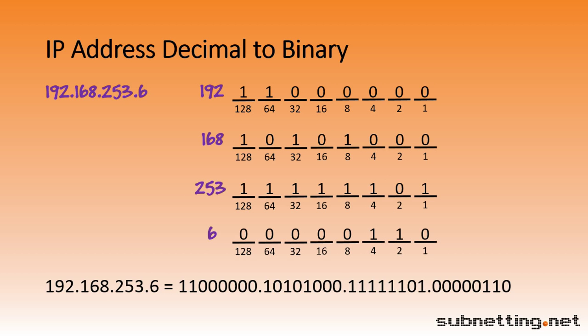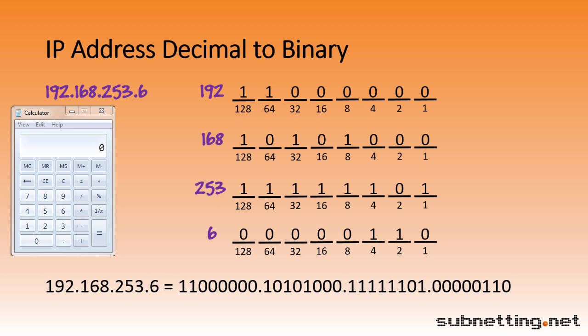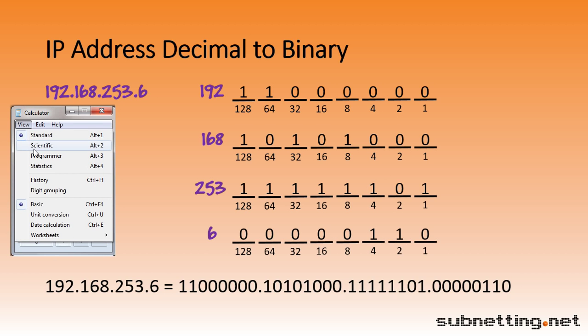Many calculators have the ability to convert between decimal and binary, and this may come in handy when you're first learning binary and want to check your work. For example, here's how to use the calculator built into Windows. When you first open the Windows calculator, it may be in standard mode. In order to use binary, we need to change into programmer mode. Click on View, and then Programmer.